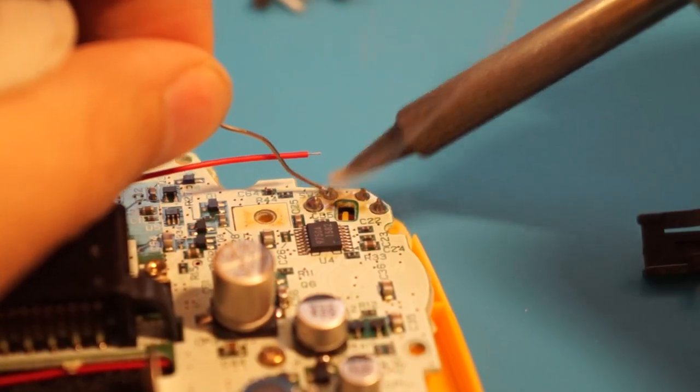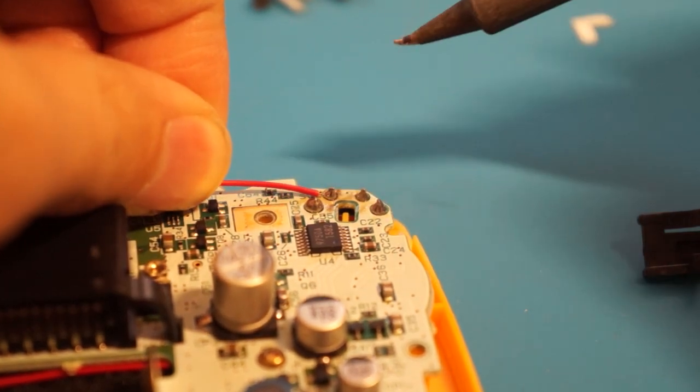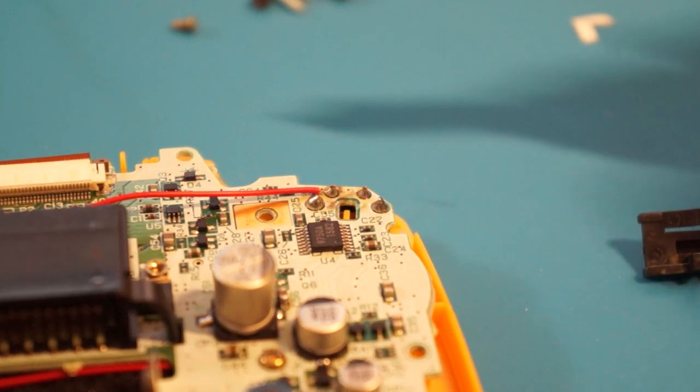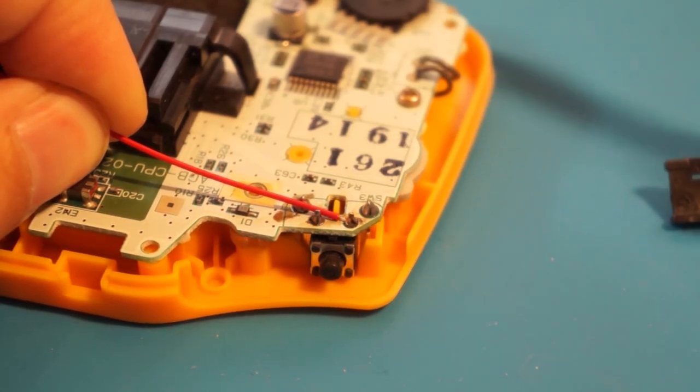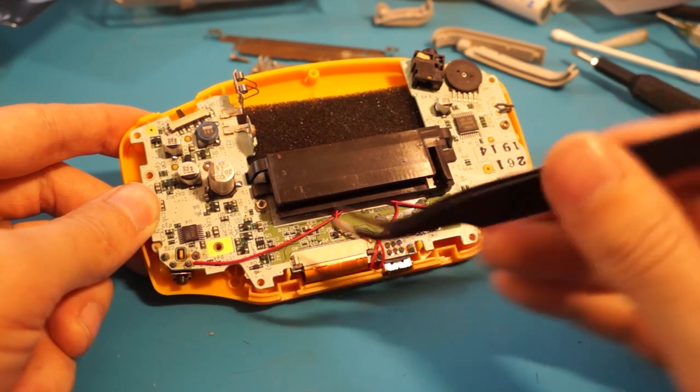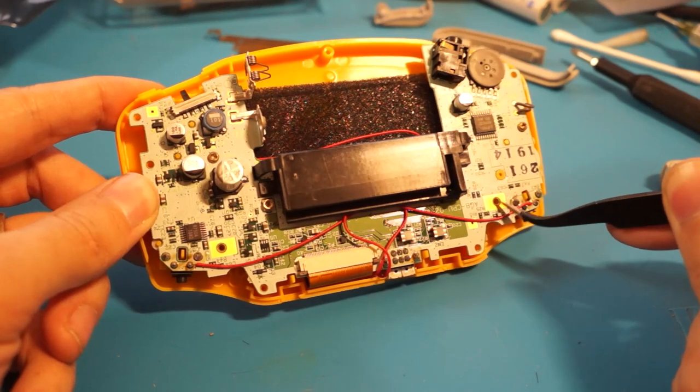Solder the connections for the L and R wires as shown. Finalize the wire placement to ensure no wires will be pinched during reassembly. We recommend a configuration as shown.